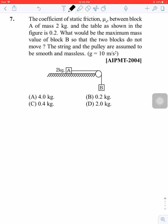The coefficient of static friction mu between block A of mass 2 kg and the table is shown in the figure as mu = 0.2. What would be the maximum mass value of block B?